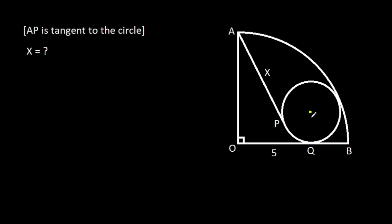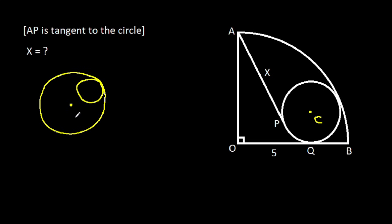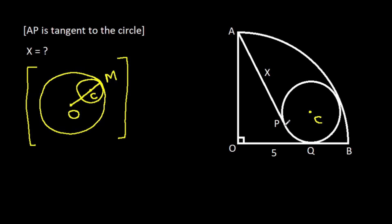Suppose the center of the inner circle is C. If two circles are touching each other, suppose the center of the quarter circle is O. Center of the inner circle is C, and if we join OC, then it will pass through the point of tangency M.